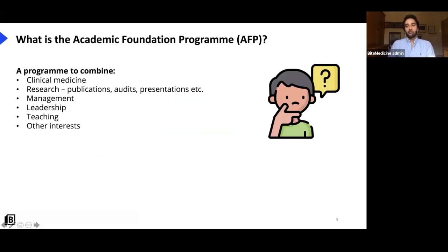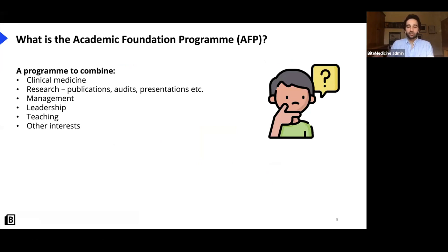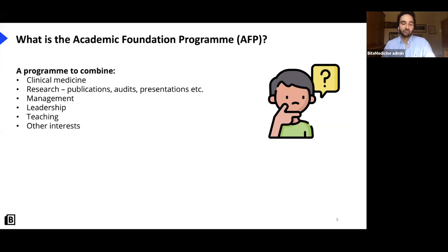The main thing to know is the difference between the normal foundation program and the academic foundation program. Once you finish medical school you'll be an F1 then an F2 — that's the normal foundation program. It's two years with three blocks per year, each four months long, rotating through six different specialties over that two-year period. That's what most of us know about.